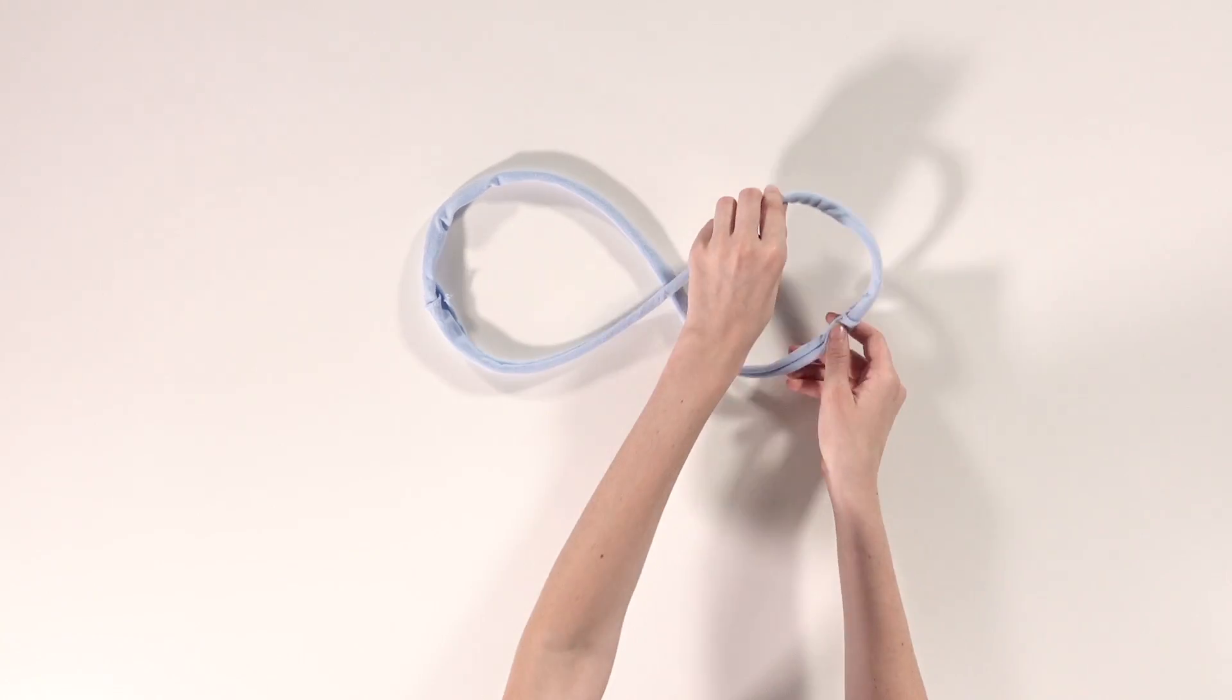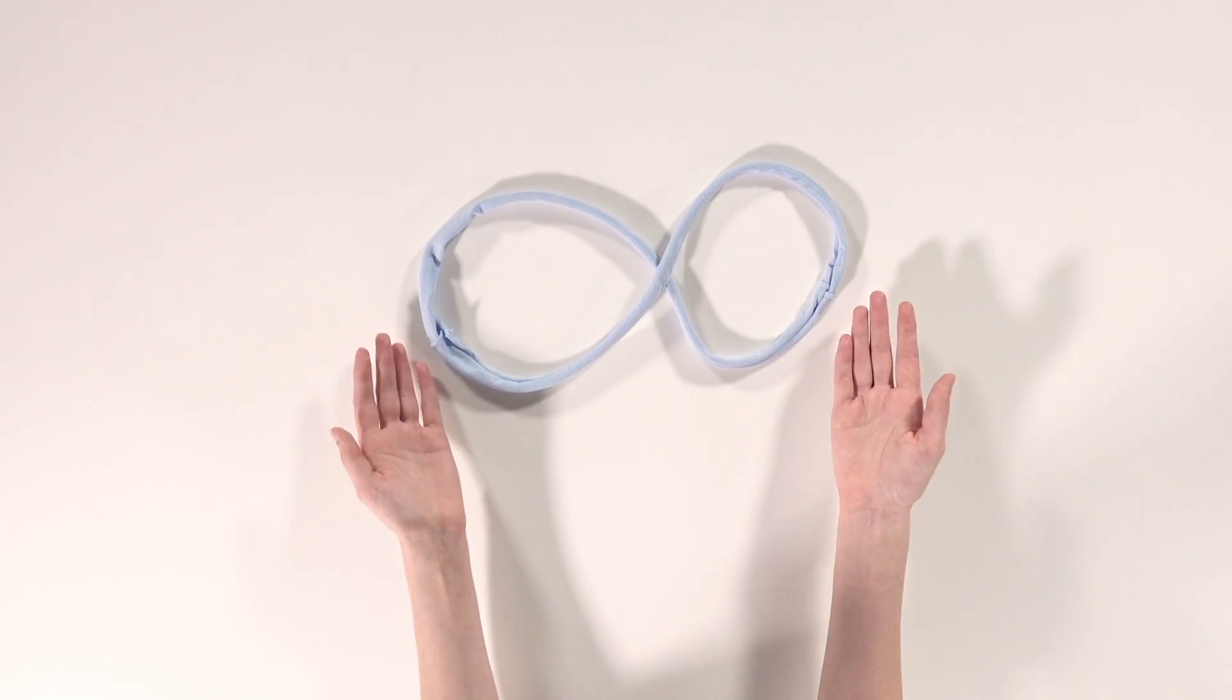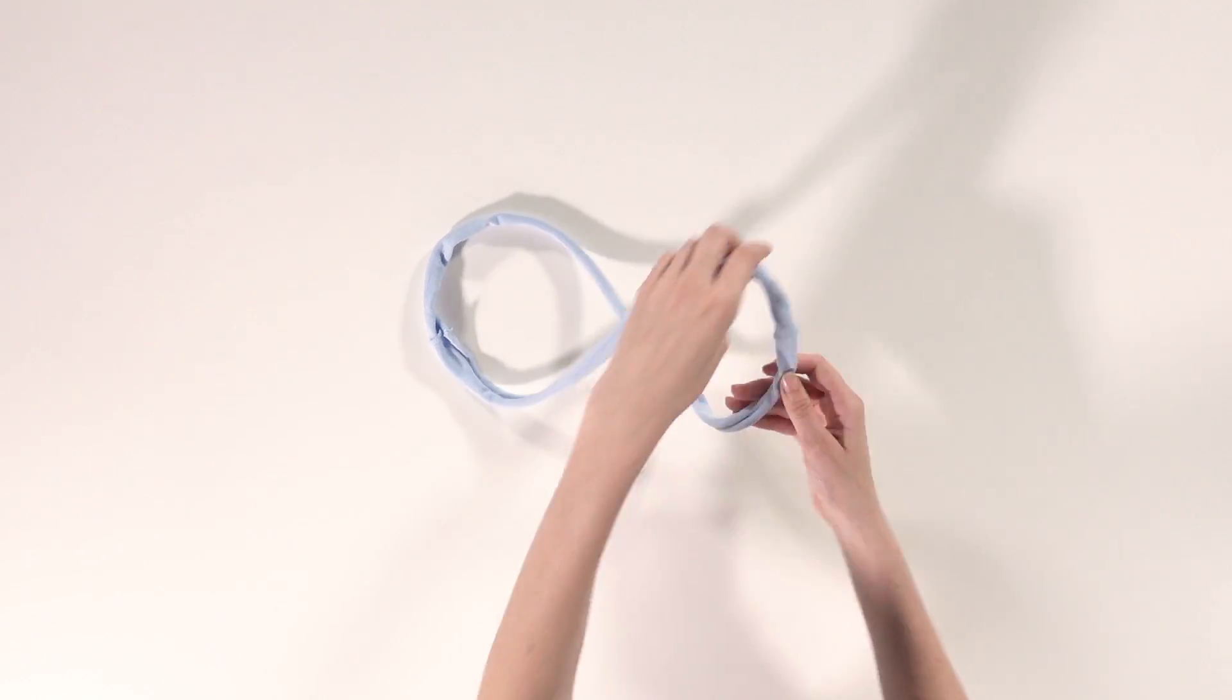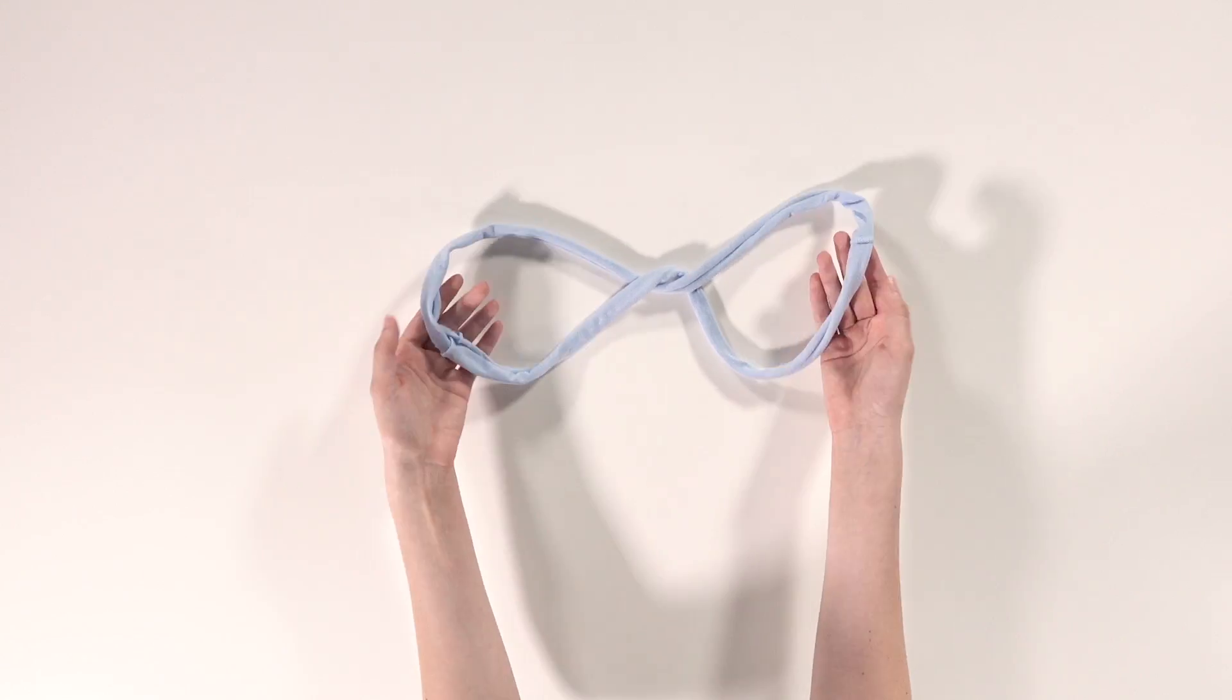Now take your loop and fold it in a figure eight like this. Fold it over once more like so and that's it. I told you this was a quick one.